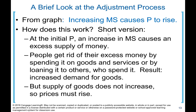How does this work? At the initial price, an increase in money supply causes an excess supply of money. People get rid of their excess money by spending it on goods and services or by loaning it to others who spend it. The result is increased demand for goods. But supply of goods does not increase, so prices must rise.